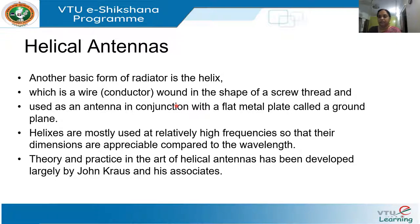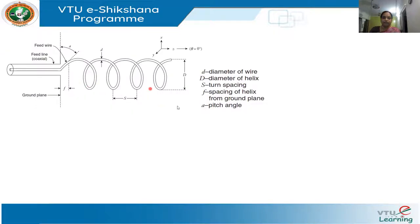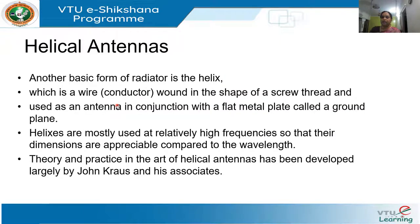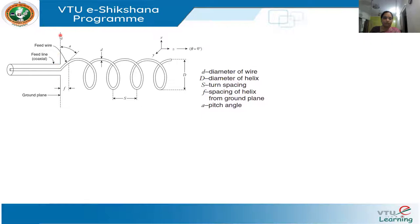These examples show that helical antennas have been widely adopted, especially for space applications and satellites. A helical antenna is one more form of a radiator — it's in the form of a helix, which is a wire or conductor wound in the shape of a screw thread. It is used as an antenna in conjunction with a flat metal plate called a ground plane. From the ground plane, this helix is fed by a coaxial transmission line — the center part connected to the helix and the outer conductor connected to the ground plane.